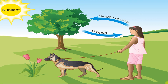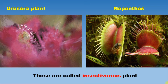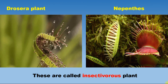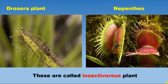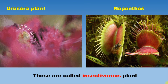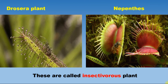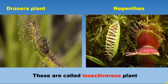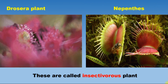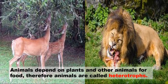There are certain plants that do not prepare their own food — they depend on insects for food. Observe in the picture: Drosera and Nepenthes are examples of insectivorous plants because they depend on insects for their food.